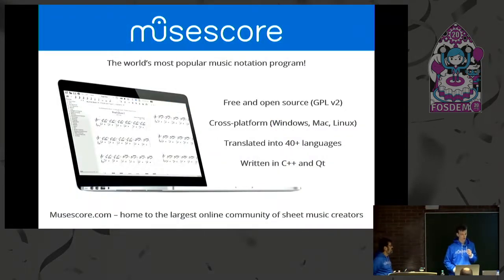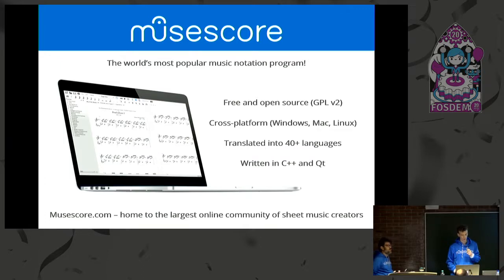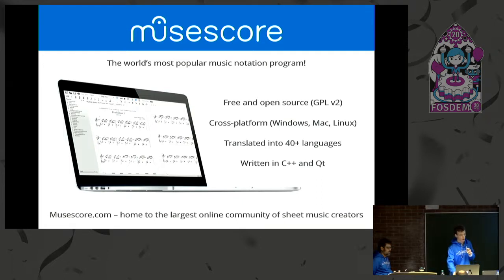So what is MuseScore? It's the world's most popular music notation program, and it's free open source under GPL version 2. It's available on all platforms, translated into 40 languages, and it's written in C++ and Qt. We also have a website, musescore.com, which is home to the largest online community of sheet music creators.